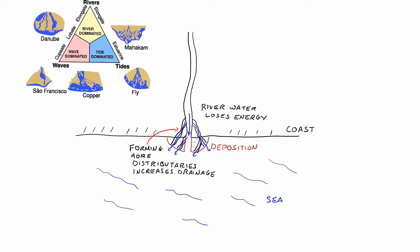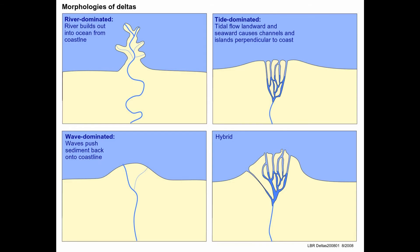Rivers can have deltas that are formed based on different types of principles, whether the waves, the river, or the tide dominates. In a river-dominated delta, the river tends to build into the ocean and it forms a birdfoot shape. If it's tidally dominated, it flows landward and seaward causing channels and islands perpendicular to the coast. If it is wave dominated, waves push sediment back onto the coast, and finally if it's a hybrid, it's a combination of the other three.